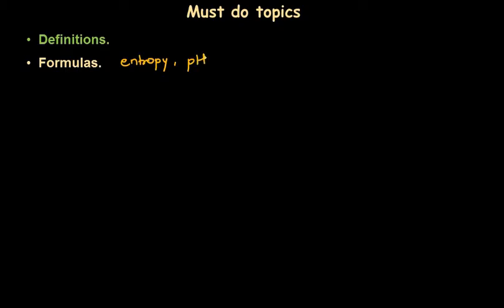Now let's look at last moment preparation. The must-do topics for last-minute revision of Paper 4 are: first, look at the definitions and learn them. Next, learn the formulas — for example, the formulas for entropy and Gibbs free energy, the formula for pH and pH of buffer solutions, and the formulas for electrode potential and related calculations like the Nernst equation.